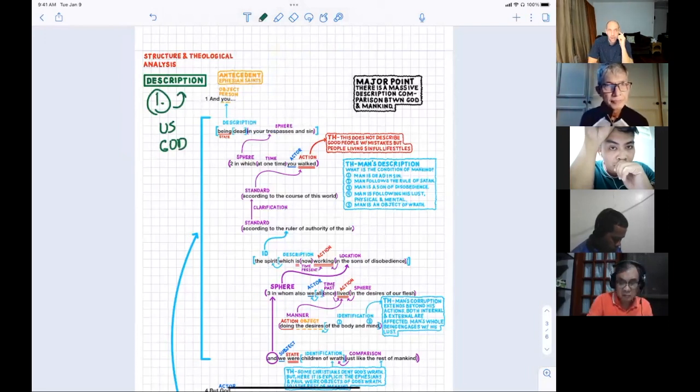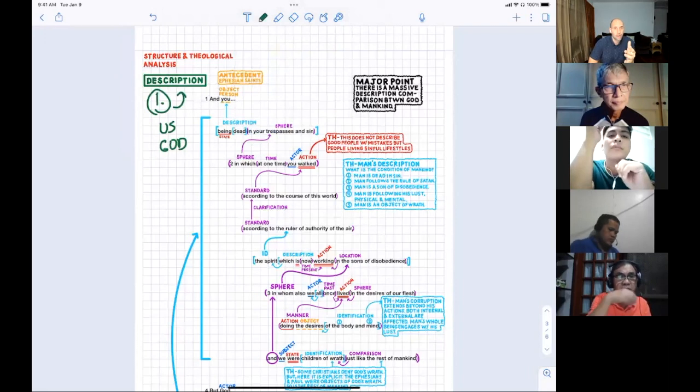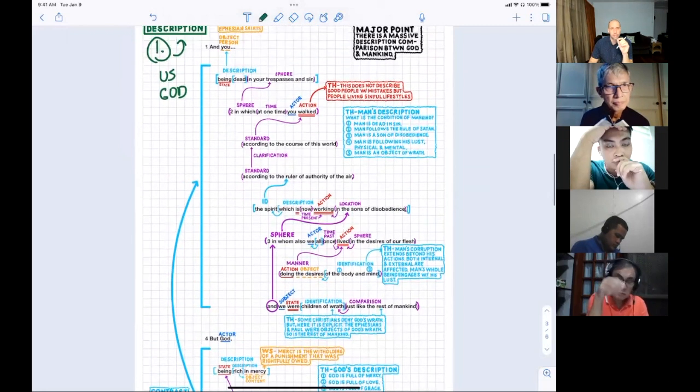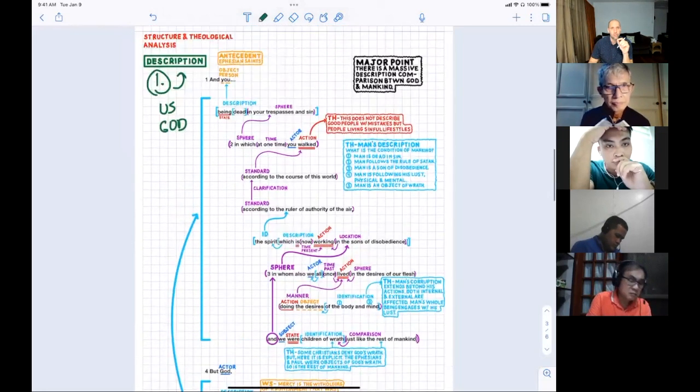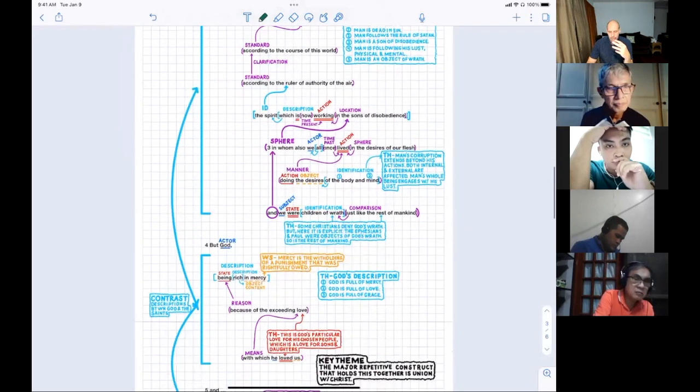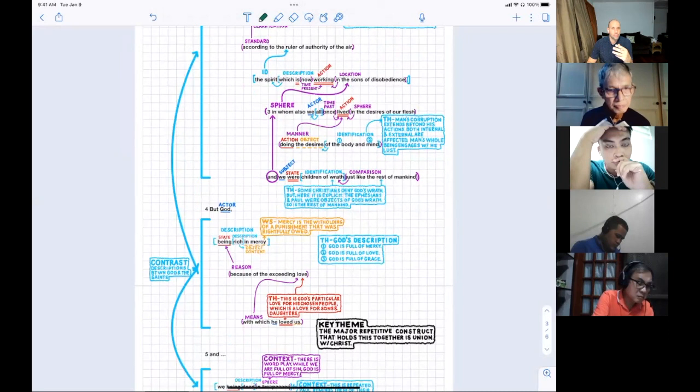The description of us and God. That's the first major point of my preaching outline. You can have sub-points and describe this in detail, but the big contrast in verses one to four is between our description and God's description. Is everyone tracking with me? That's the first major point. What are we doing? What is God doing?